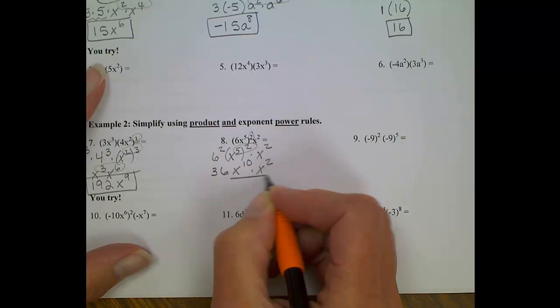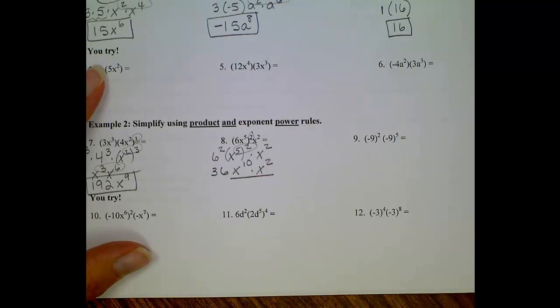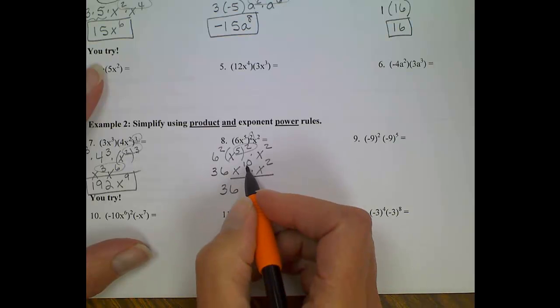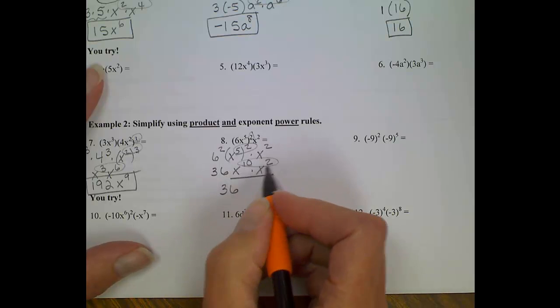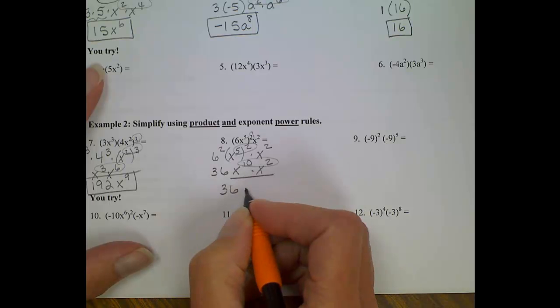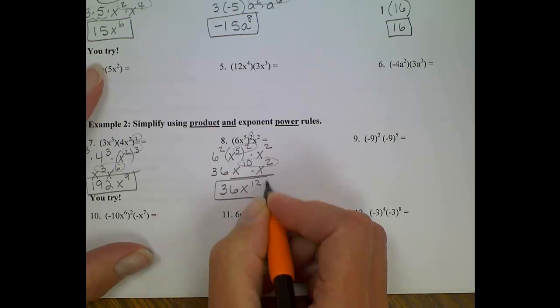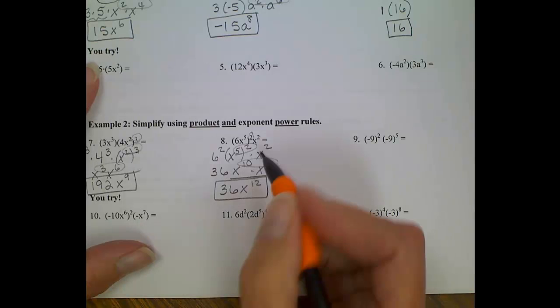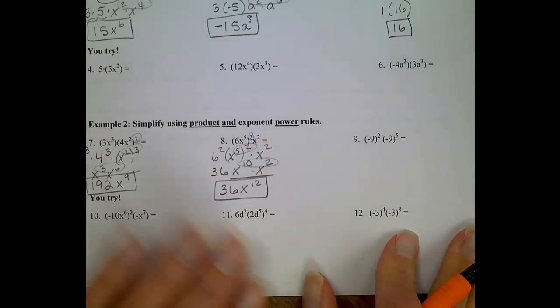One more step, and I think we'll be done. 36 is going to stay 36. And then I have the same base, powers get added when you're multiplying, so we'll have 36 x to the 12th. Final answer. Now, if this is starting to get confusing, you may want to pause, you may want to rewind, and give yourself a second to have all this soak in.